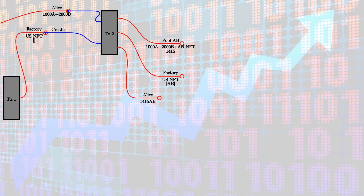The second output is the Uniswap factory again with the same NFT as before, but now the datum has been updated — the list of all liquidity pools now contains an entry for the newly created AB pool. The third output goes to Alice, where she receives the freshly minted liquidity tokens, which I call AB to indicate they belong to pool AB.